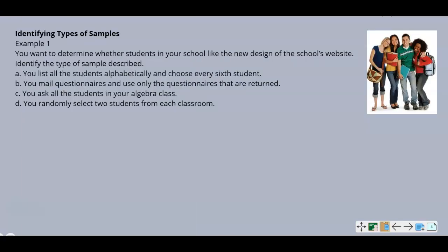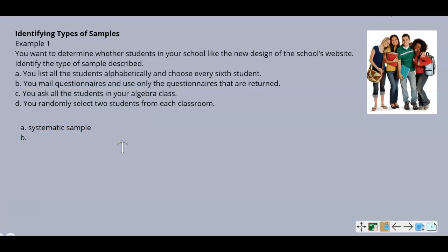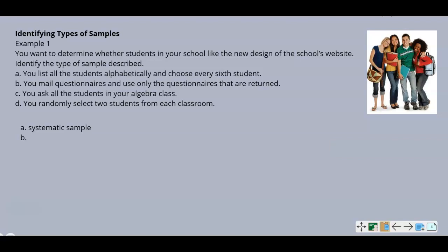Example 1: Identifying types of samples. You want to determine whether students in your school like the new design of the school's website. Part A: you list all the students alphabetically and choose every sixth student. Because you're using a rule and selecting every sixth student, this would be a systematic sample. Part B: you mail questionnaires and use only the questionnaires that are returned. The people decide whether they participate, so that would be self-selected.